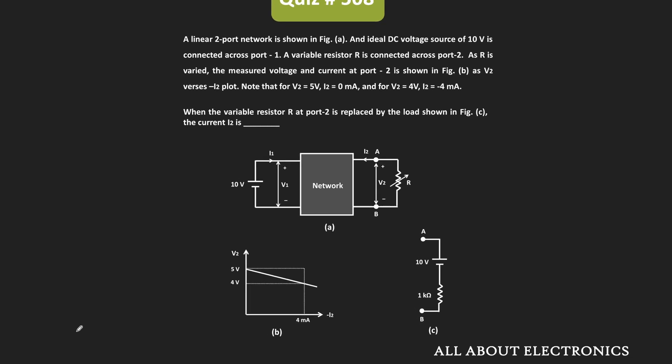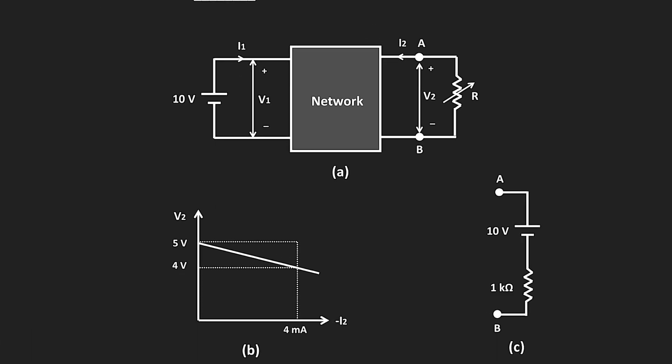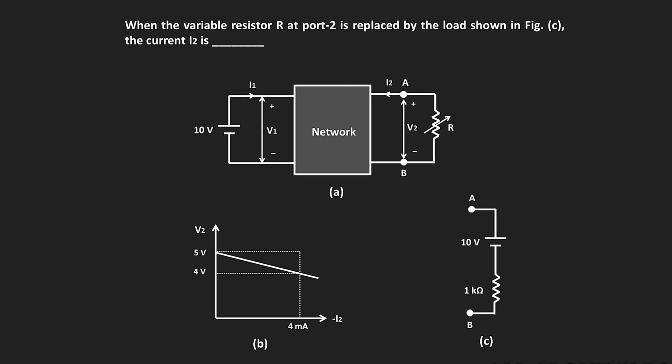In this question, we have been given a linear two-port network. On the port 1 side of this network, a 10V voltage source is connected. And on the port 2 side, a variable resistor R is connected. This R is varied and the voltage on port 2, that is V2 and I2, are measured. We have also been given the plot for V2 versus minus I2, which shows how V2 and I2 vary as the value of R changes.